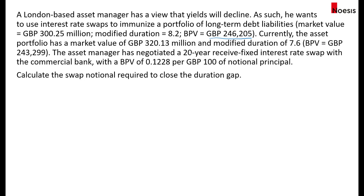The asset manager has negotiated a 20-year received fixed interest rate swap with the commercial bank where the swap will have a basis point value of 0.1228 per 100 pounds of notional principal. Let's calculate the swap notional required in order to close the duration gap between the liability and the asset.